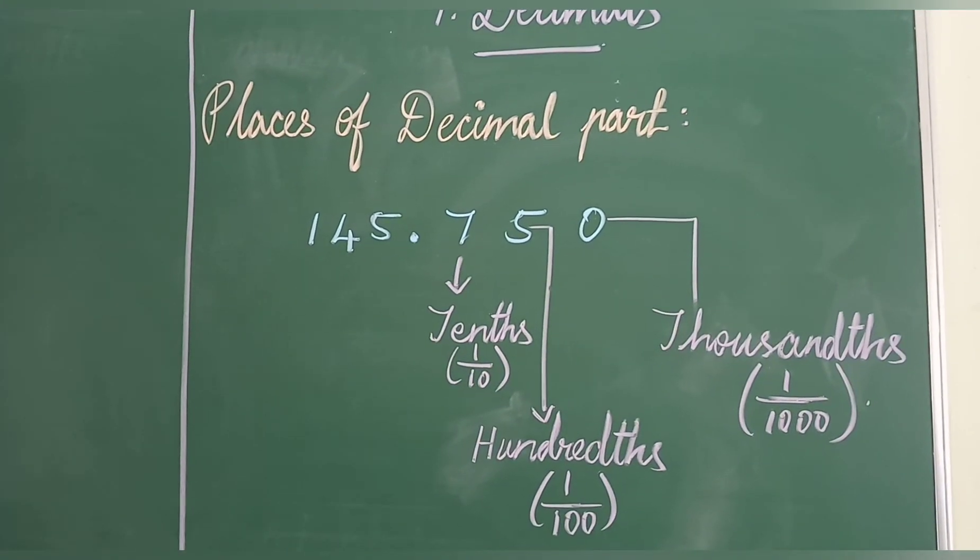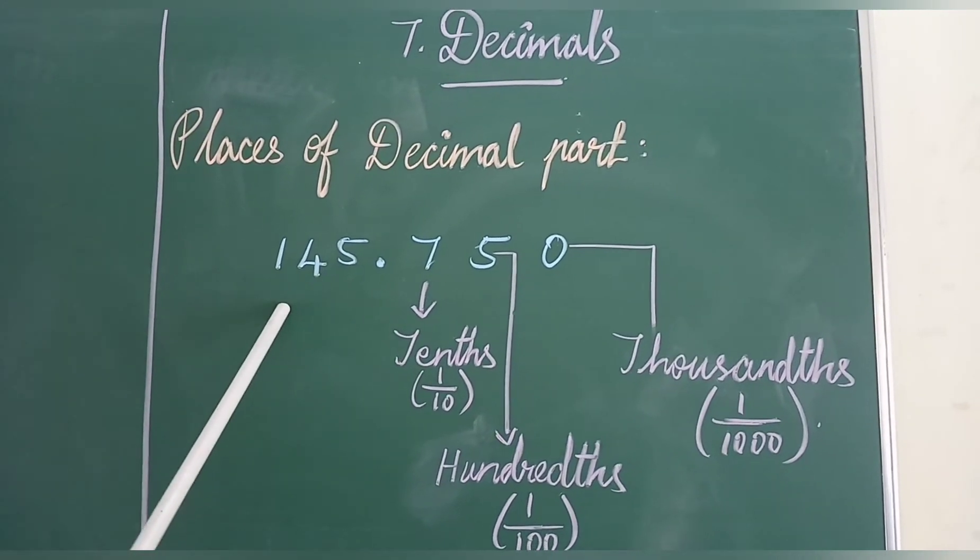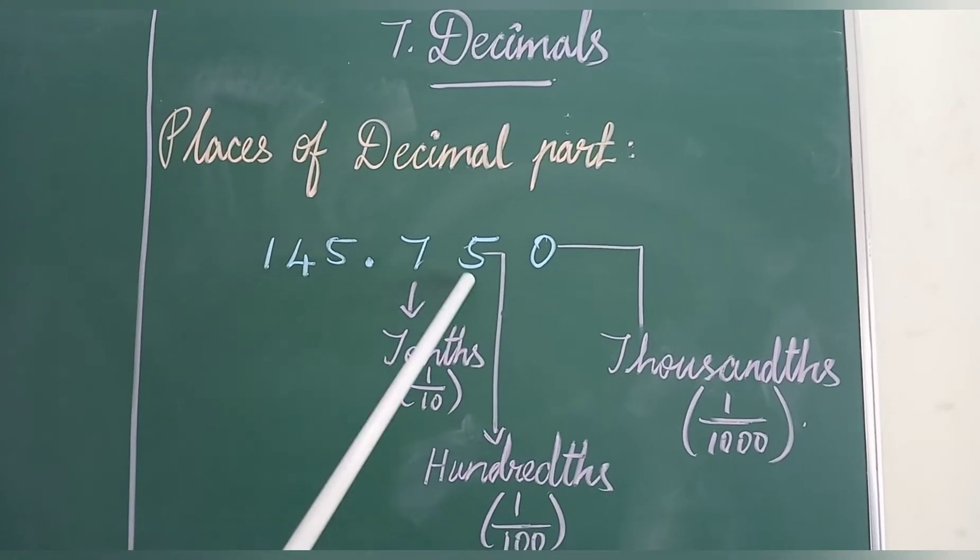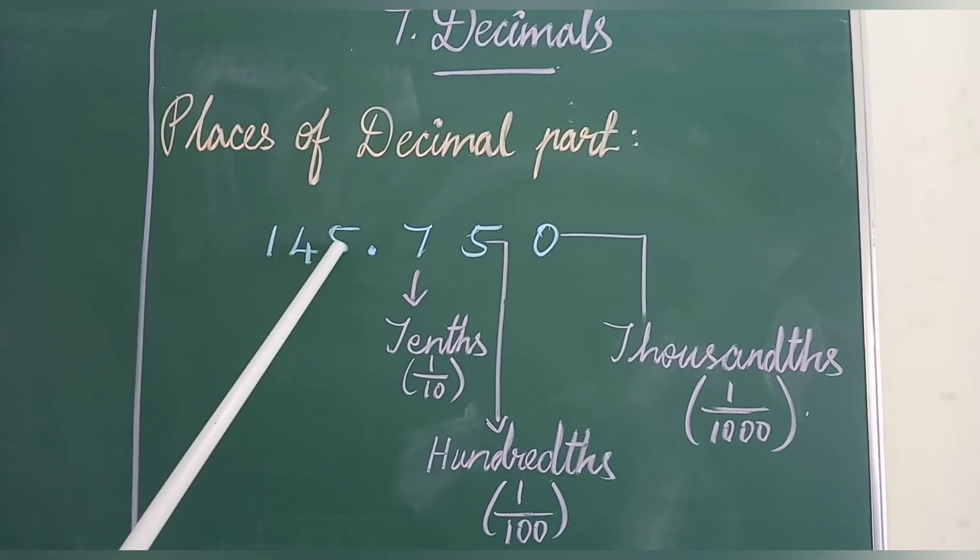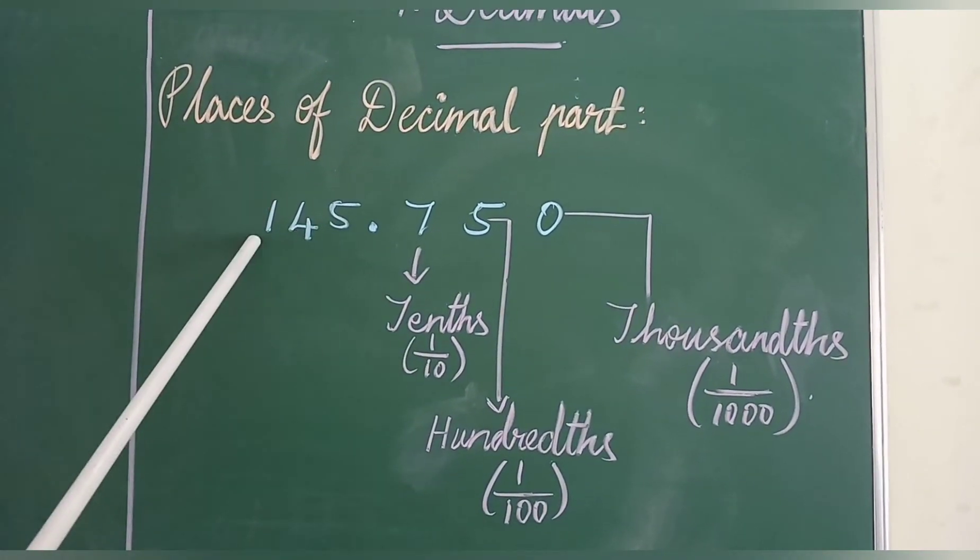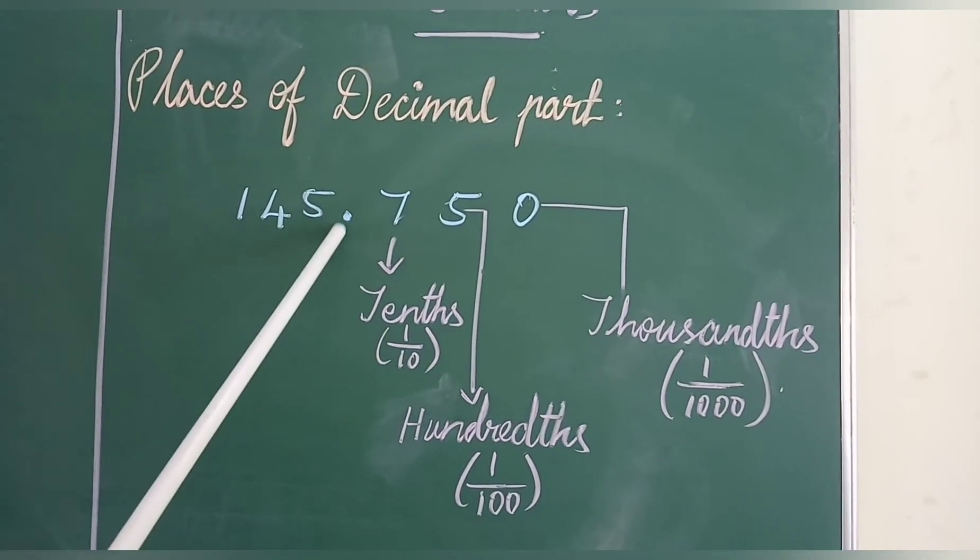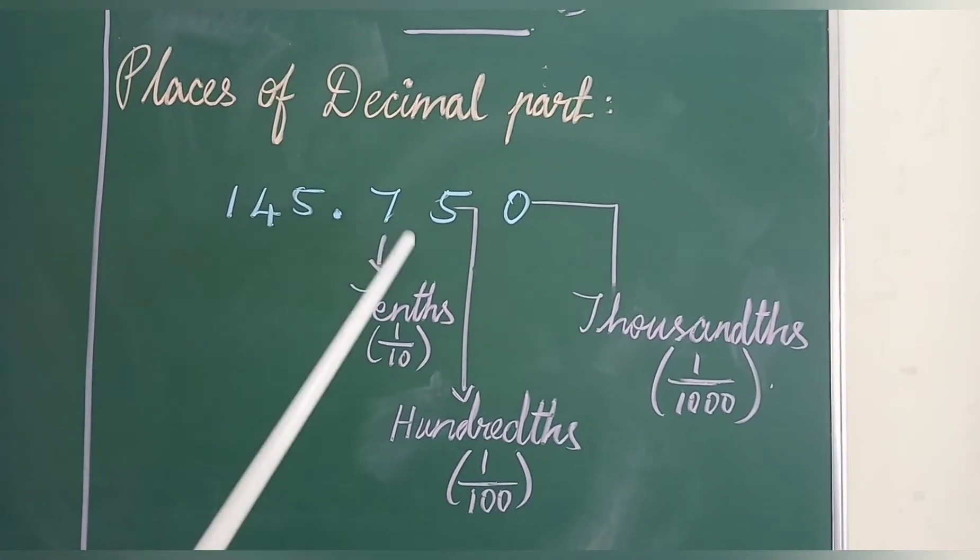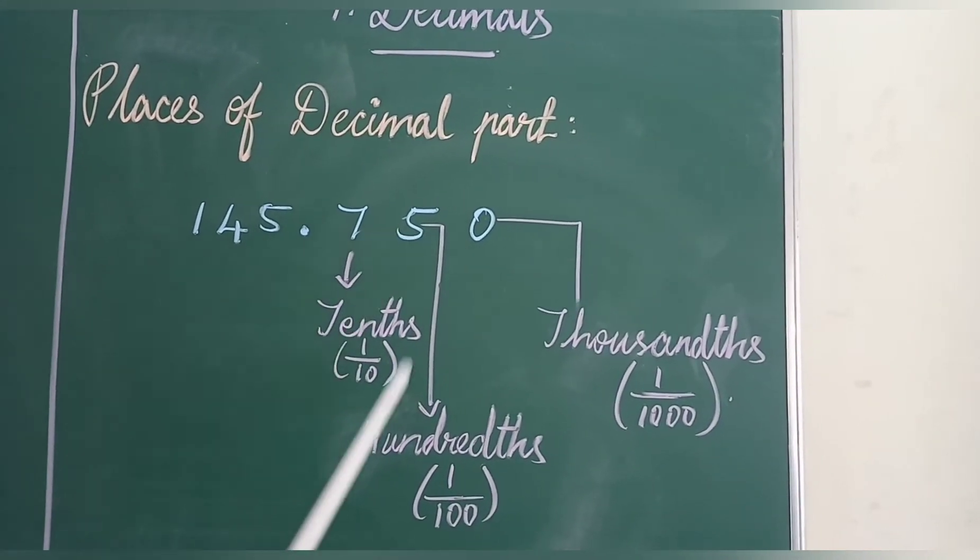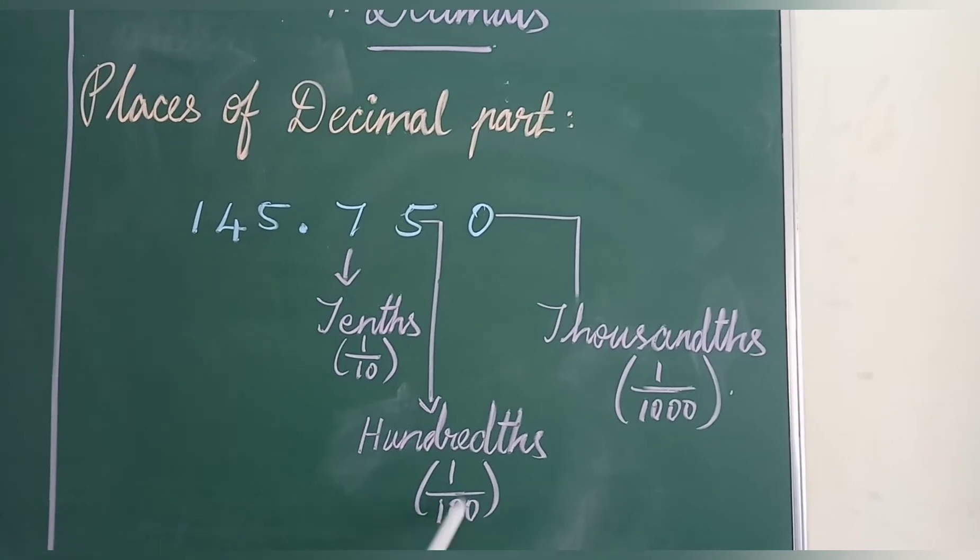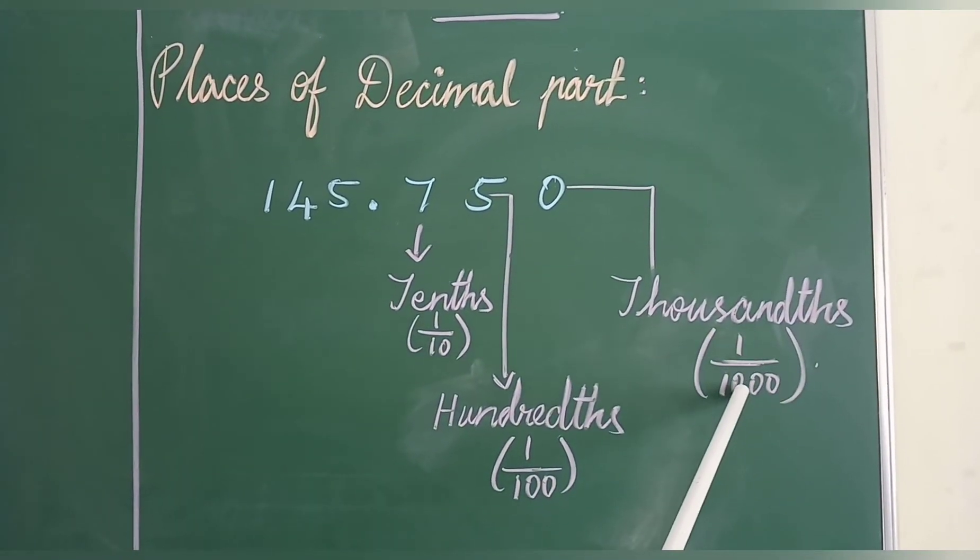Now let's see the places of decimal point. Before the point, the places are ones, tens, hundreds. After the point, the places are tenths (1 by 10), hundredths (1 by 100), and thousandths (1 by 1000).